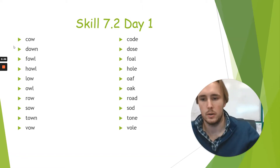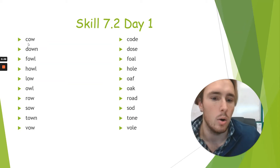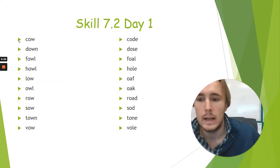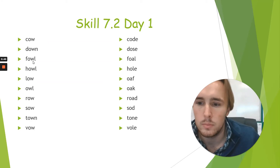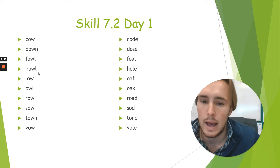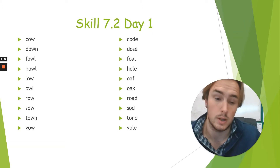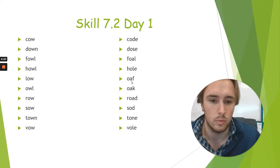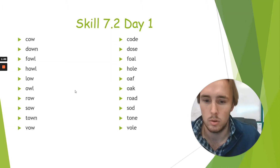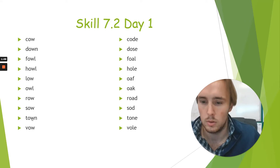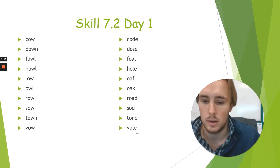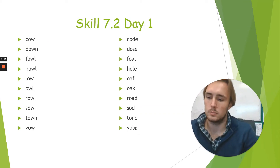Before we begin, I need to know if you can hear these sounds. If you hear the OW sound, raise your hand. Let's try: cow, how, down, foul — raise your hand if you hear OW. Did you raise your hand on 'hole'? You shouldn't have, because you didn't hear the OW sound. Now listen: oaf, owl, road, row, sod, sow, town, tone, vowel, and vole.